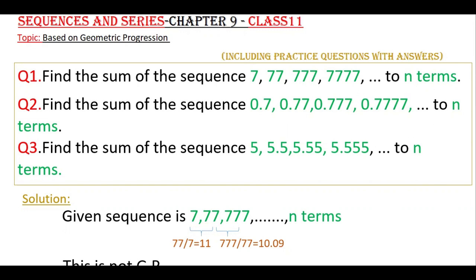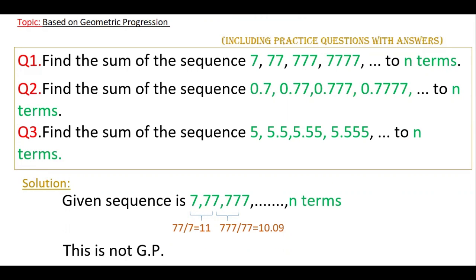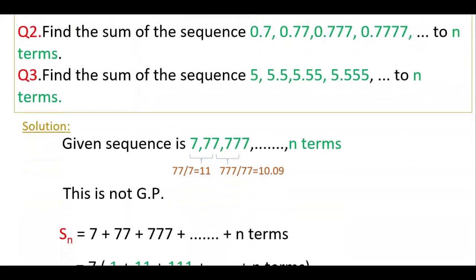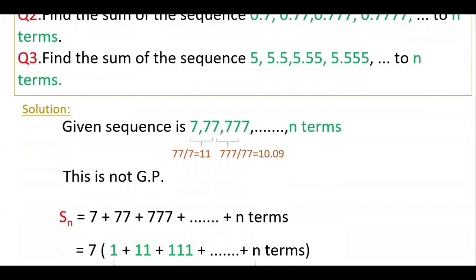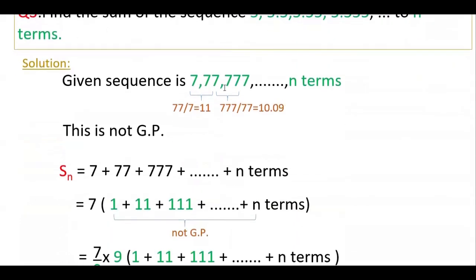First you have to check whether these terms are in GP. For that you have to find the common ratio. 77 by 7 is 11, and 777 by 77 is 10.09 — so the common ratio is not the same. Therefore this is not a GP, and you have to convert this sequence into GP.